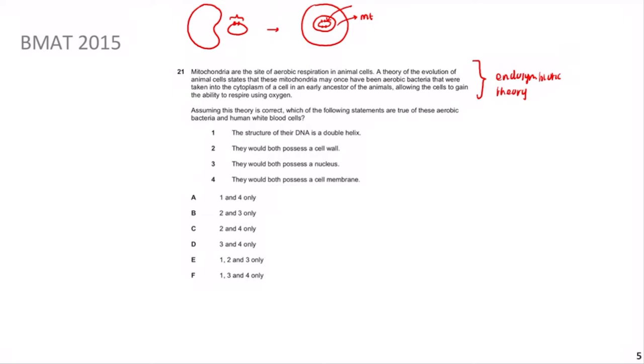The question asks: assuming this theory is correct, which statements are true of both aerobic bacteria and human white blood cells? Pause the video and give it a go. Statement 1: the structure of DNA is a double helix - by definition, DNA is always a double helix regardless of organism, so this is correct. Statement 2: they would both possess a cell wall - bacteria have a cell wall, but animal cells including human white blood cells do not, so this is incorrect.